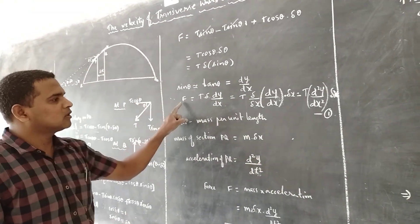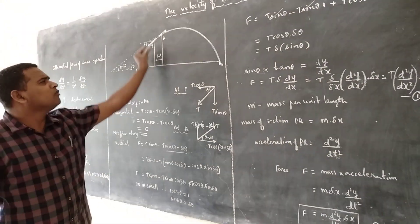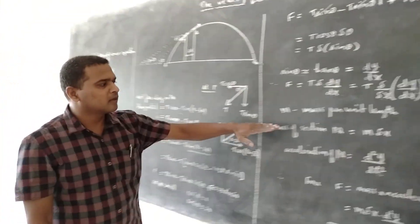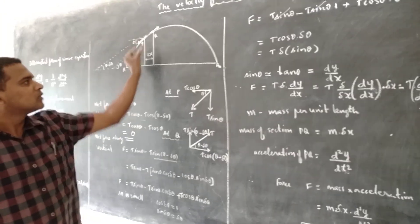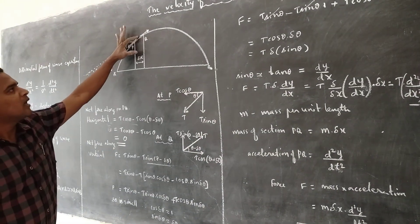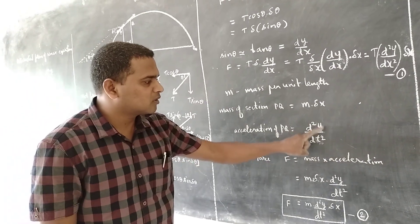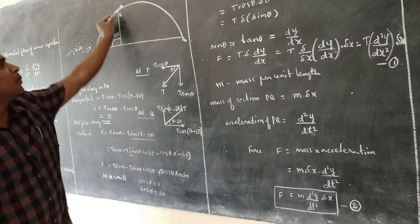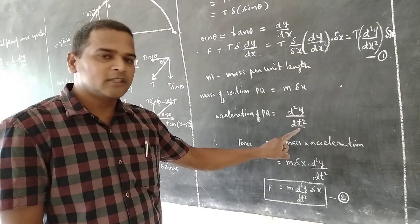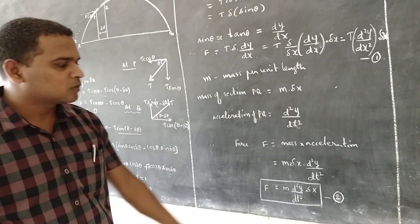The net force on section PQ is F = T · (d²y/dx²) · Δx. Now we consider the mass of the small portion PQ. Let m be the mass per unit length of the string. The mass of section PQ, which has length Δx, is m · Δx. The acceleration of section PQ is d²y/dt². By Newton's second law, force equals mass times acceleration, so F = m · Δx · (d²y/dt²). Let this be Equation 2.